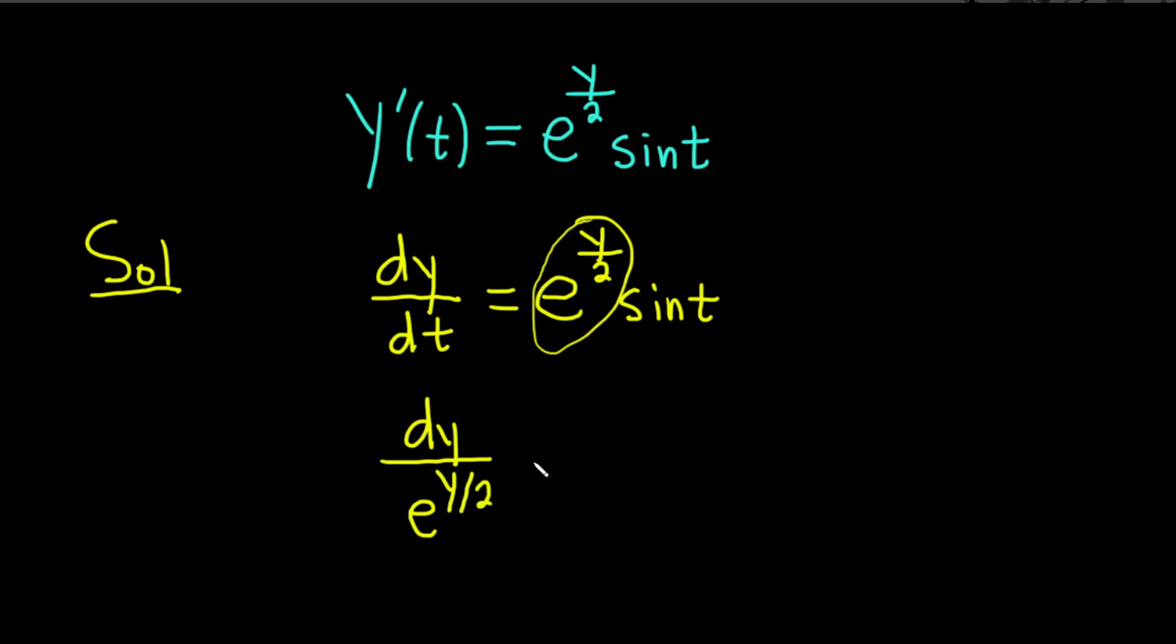So we're dividing both sides by this and that's equal to, now we're going to multiply by dt. So that's going to give us the sine of t and then here we have dt. So again we divided by e to the y over 2 and we multiplied by dt. So we end up with this.